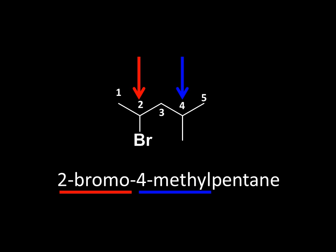Notice that when writing the name, the number comes immediately before the group that it describes. Note also that where a number is followed by a letter, we use a hyphen between those. Where two letters follow each other — so the methyl runs into the pentane — there's no hyphen and no space. Note also that when we write the name, the groups attached are listed in alphabetical order. So bromo comes before methyl. Likewise, chloro would come before iodo, ethyl before methyl, and so on.